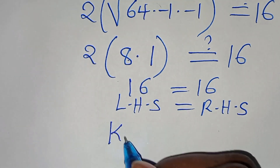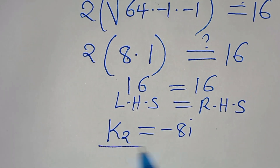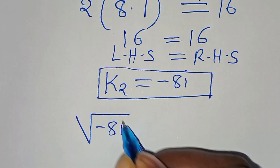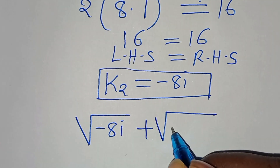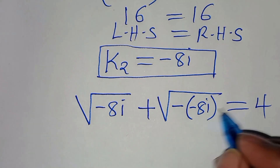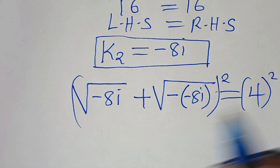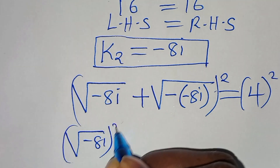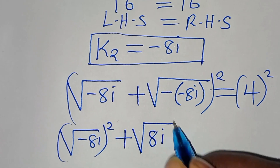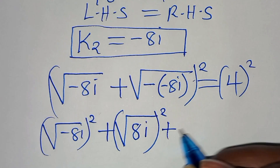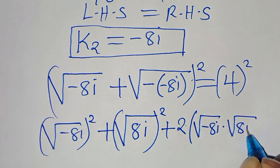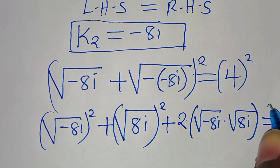Now let's check k2 equals minus 8i. We have the square root of minus 8i plus the square root of minus times minus 8i, which is the square root of 8i, equals 4. Squaring both sides gives the square root of minus 8i squared, plus the square root of 8i squared, plus 2 times the square root of minus 8i times the square root of 8i, equal to 16.